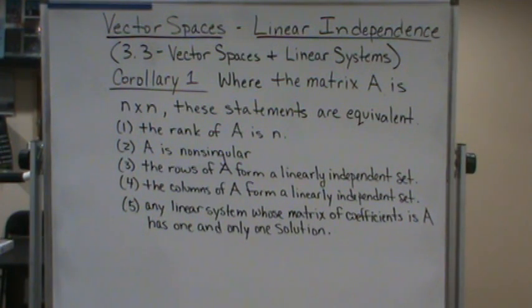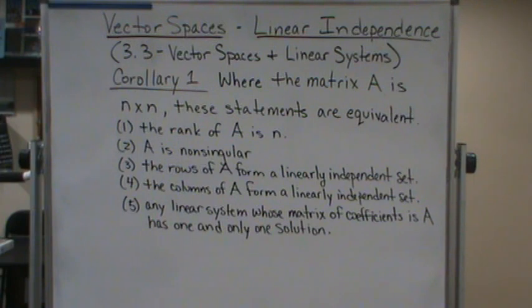Now the only one that you probably want to look at is the if and only if between four and five. But that holds because we know that a set of n column vectors is linearly independent if and only if it is a basis for R^n.